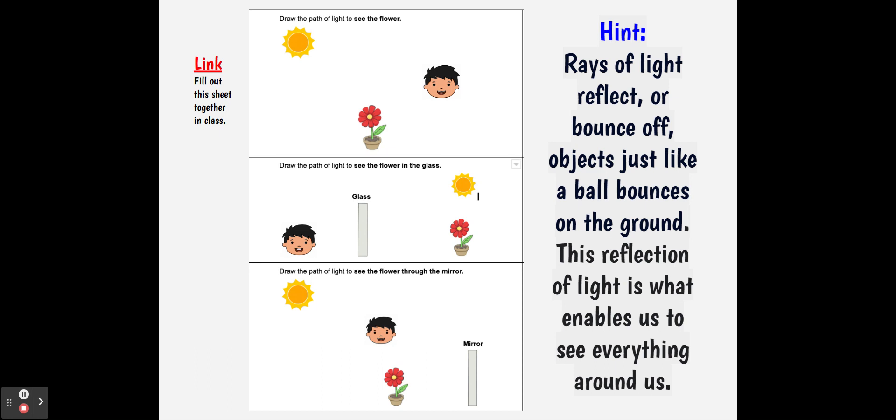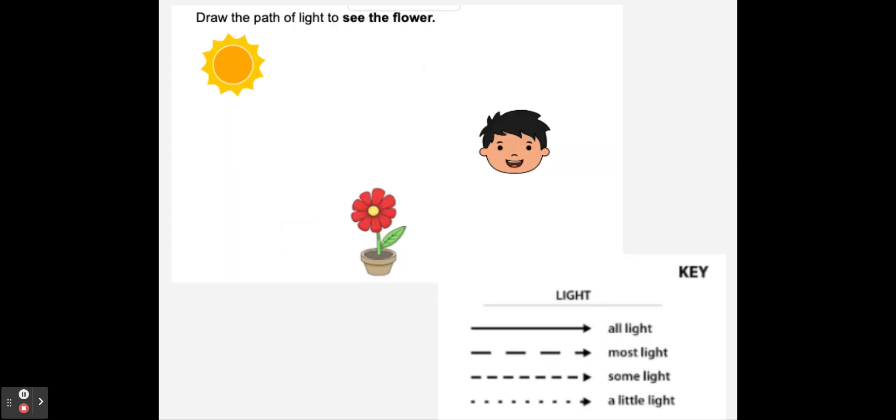So here's a hint: Rays of light reflect or bounce off objects, just like a ball bounces on the ground. This reflection of light is what enables us to see everything around us. So we're going to start with this worksheet, and we're going to use that key that we had in lesson five. And I'm going to ask you to pause the video, and I'm going to ask you to draw the path of light to see the flower. So pause now and draw that light.